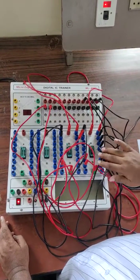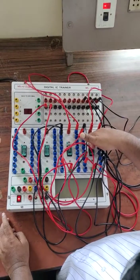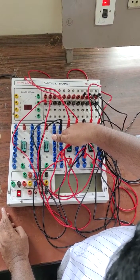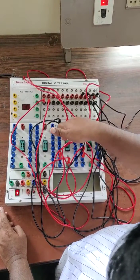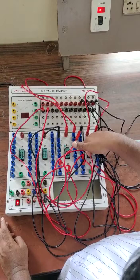Now I am going to demonstrate a Johnson counter using 7495. I am using another IC called 7404 because I am using an inverter along with the 7495.